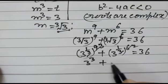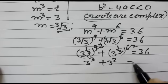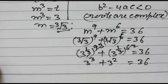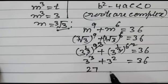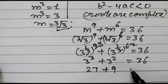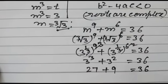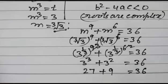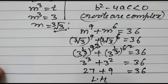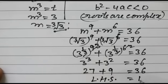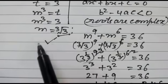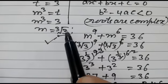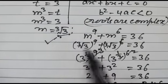So we get 3 to the power 3 plus 3 to the power 2 is equal to 36. That is 27 plus 9 equals 36. Left hand side is equal to right hand side, so our answer is correct. The value of m is the cubic root of 3.